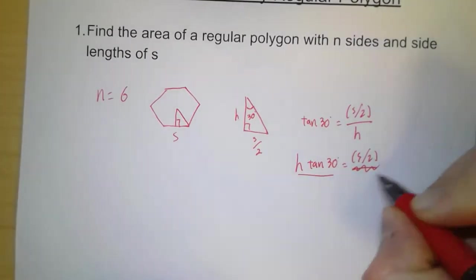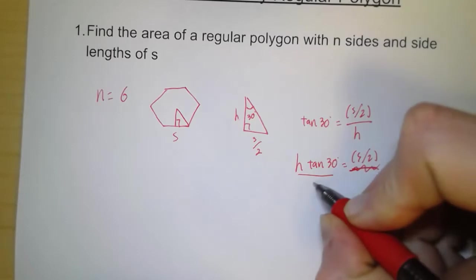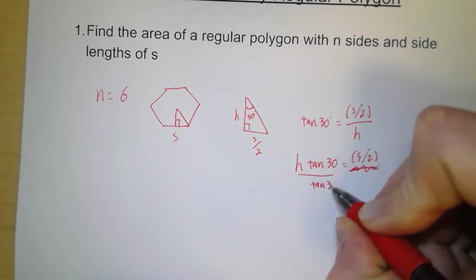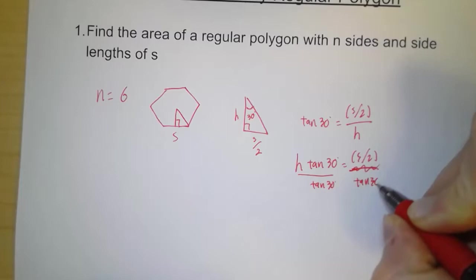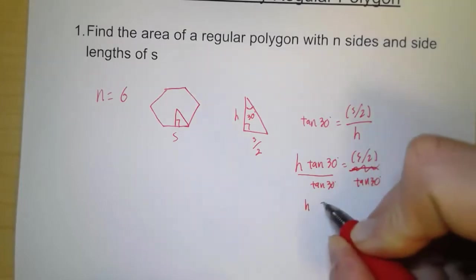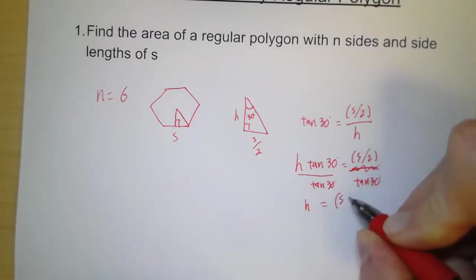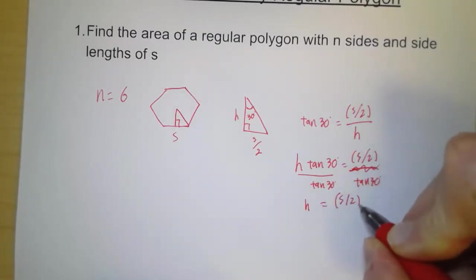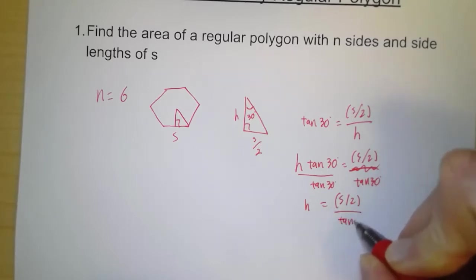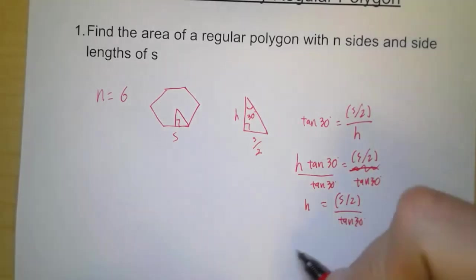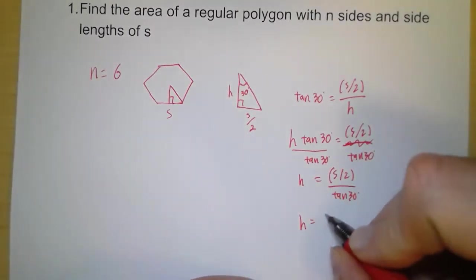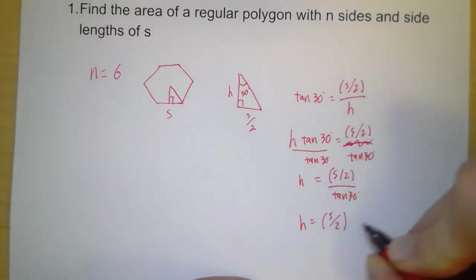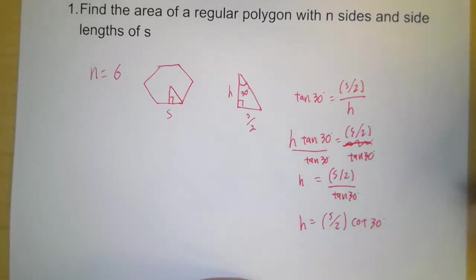We divide by tangent of 30 degrees, and so we have s over 2 divided by tangent of 30. We can rewrite this as s over 2 times cotangent of 30, so that we're not dividing by 30 degrees.